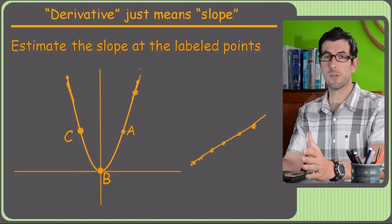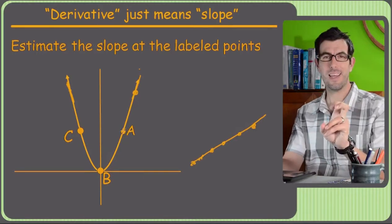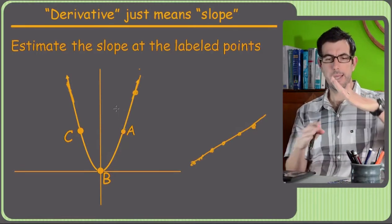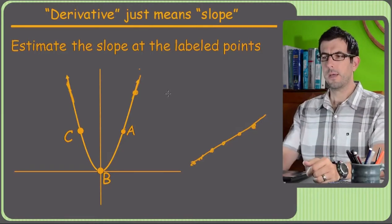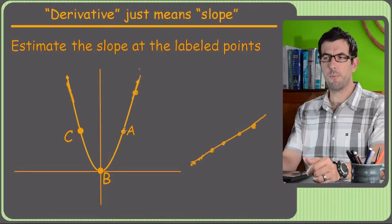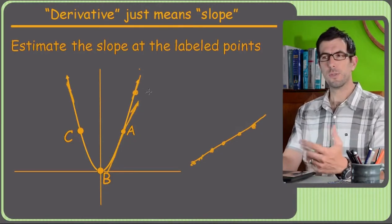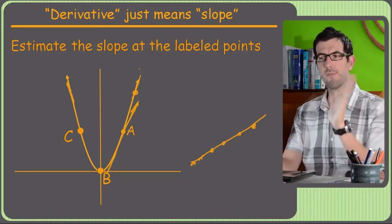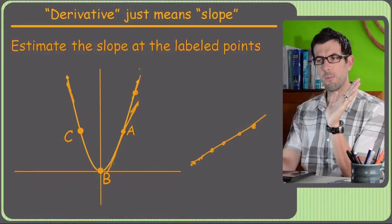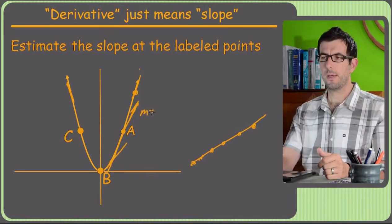We're not going to actually calculate it — that's what derivatives are all about, figuring out the exact slope. But let's just try to ballpark it. If you want to draw a tangent line, which is a line that barely touches the curve and just skims right past it at a point, we can estimate. At point a, if we draw a tangent line, it's obviously very steep. A slope of one would be a 45-degree angle, but up here it's steeper — so maybe this is a slope of two.